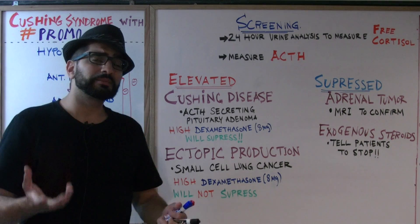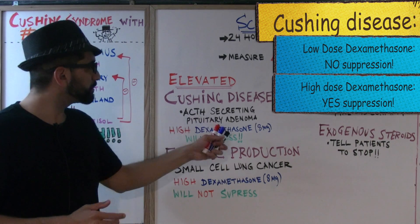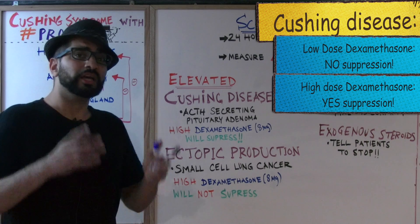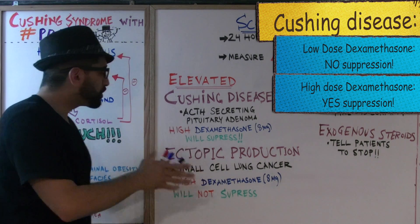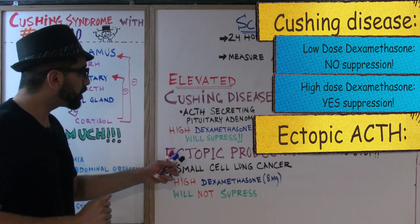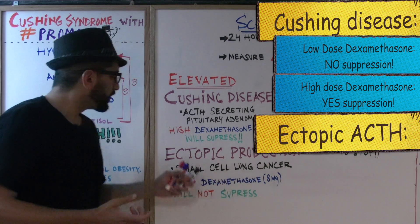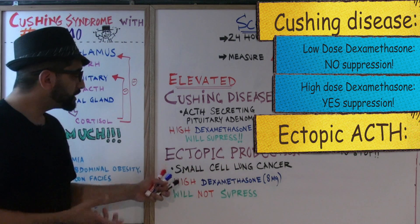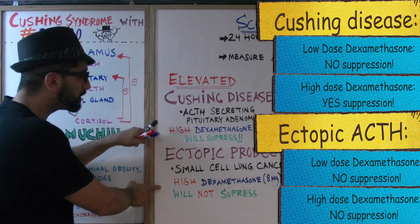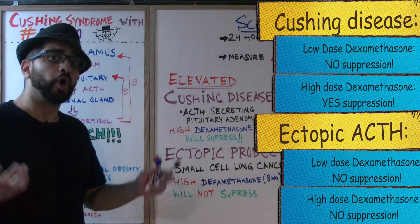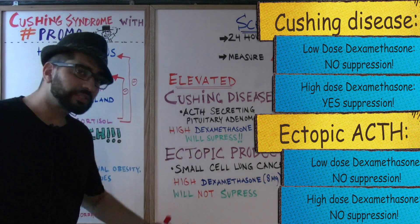In Cushing's disease, a low-dose dexamethasone suppression test does nothing — ACTH is still released. But a high dose of dexamethasone (8 mg) will suppress the ACTH levels from the anterior pituitary. In contrast, with ectopic production of ACTH — for example from small cell lung cancer — even high-dose dexamethasone will not suppress ACTH production. That's how you tell the difference: high-dose dexamethasone suppresses ACTH in Cushing's disease but not in ectopic production.